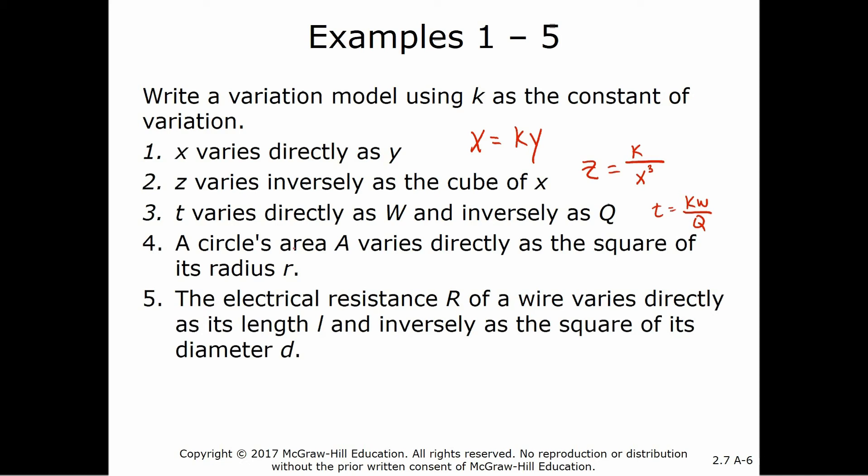What about a circle's area varies directly as the square of its radius r? So k r squared. And we know what k is in this case, because we know the formula for area, right? What would k be? What's the formula for a circle, the area of a circle? It's pi r squared, right? So in this case, k would be pi.